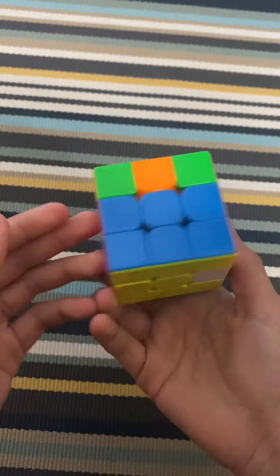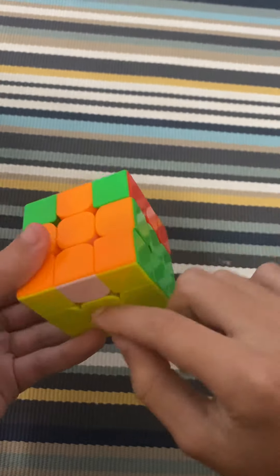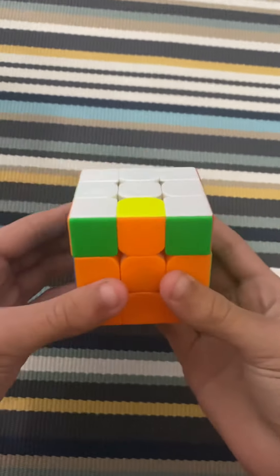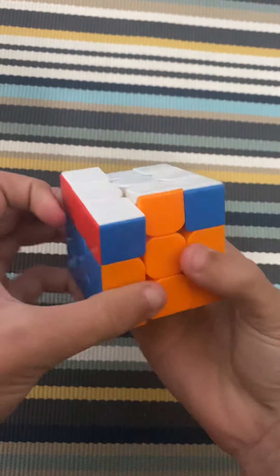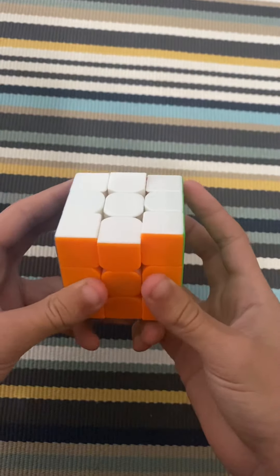And we need to get this here, so this is an easy case. We just do this, and then we just do PLL which will always be one of these perms.